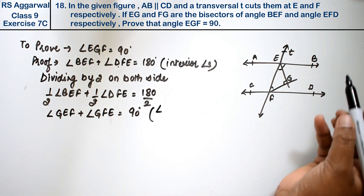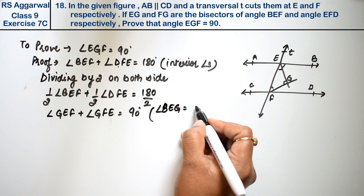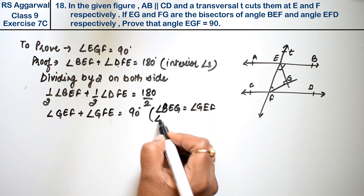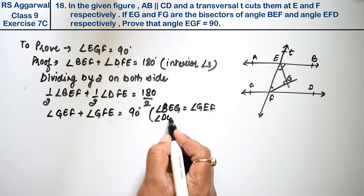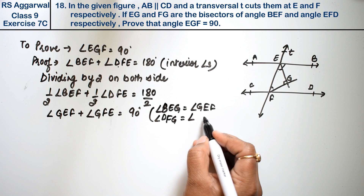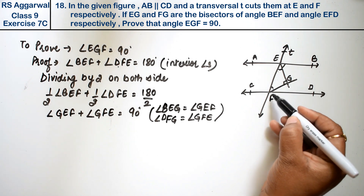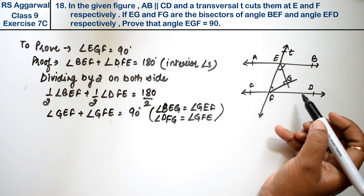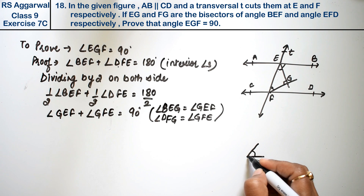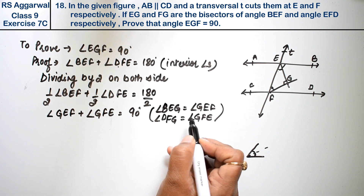This is because angle BEG equals angle GEF, and angle DFG equals angle GFE. These angles are equal because it is given that FG and EG are the bisectors of their respective angles.